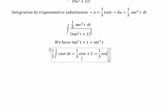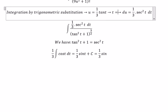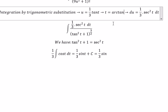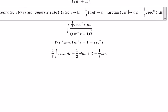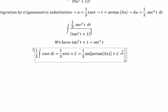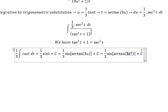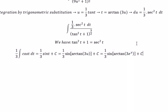Now we need to change back. We had u equal to 1 over 3 tan(t), so multiplying both sides by 3 gives t equal to arctan of 3u. Then we substitute u back as e to the power of s, and this gives us the final answer.